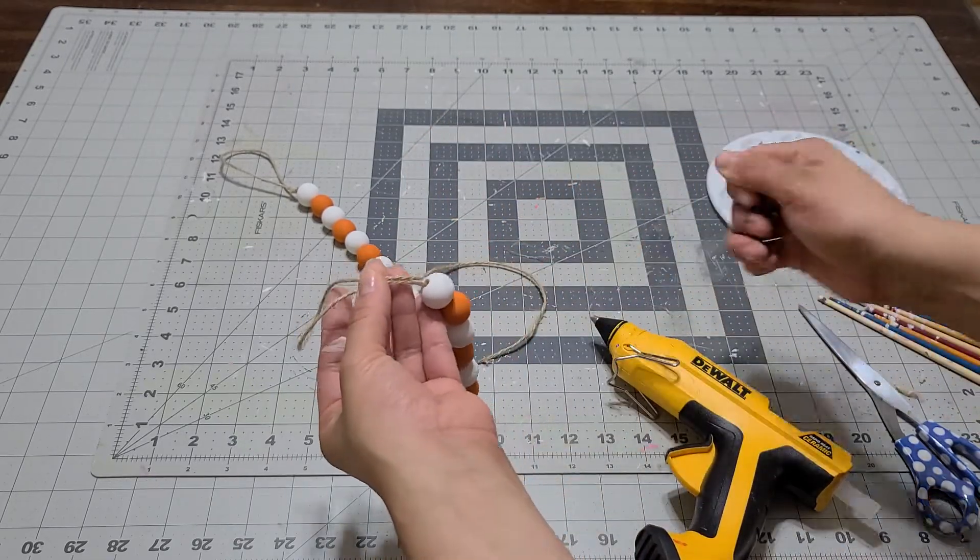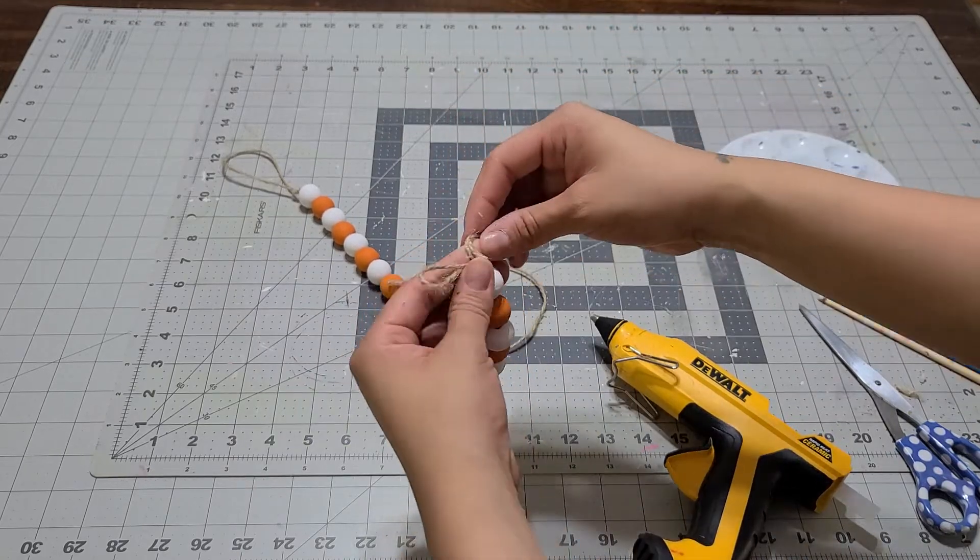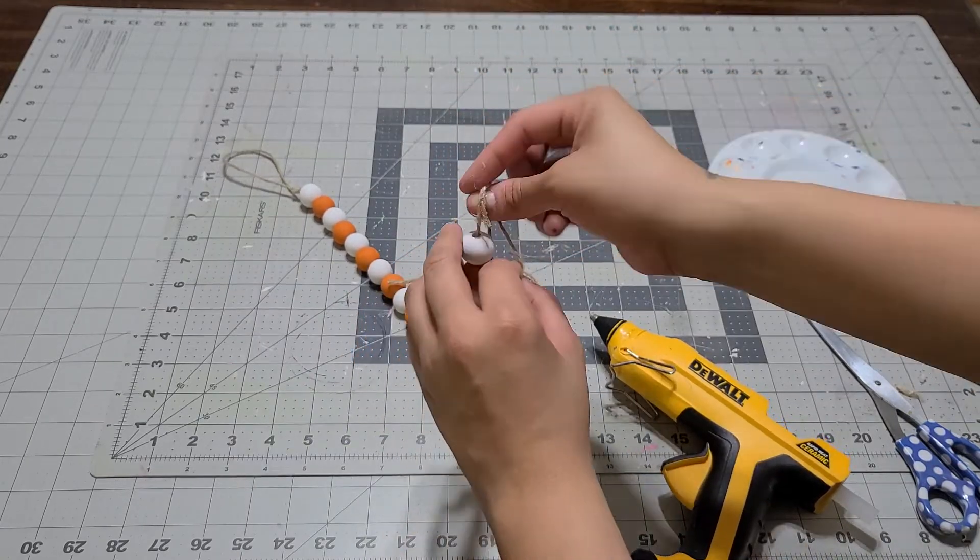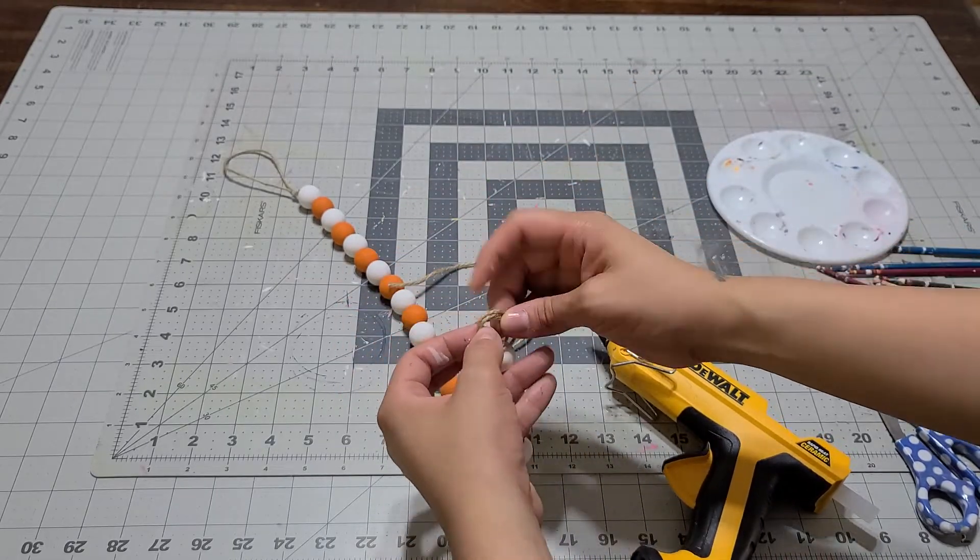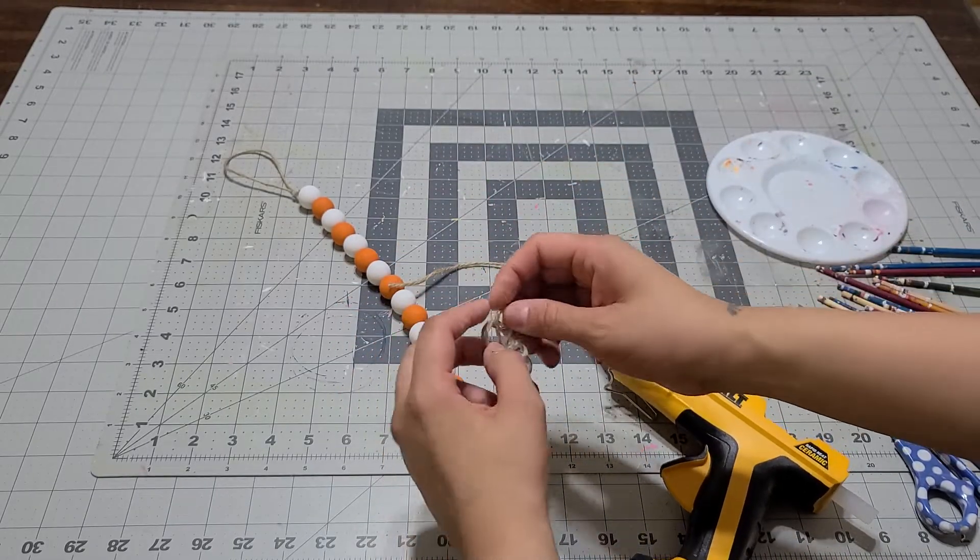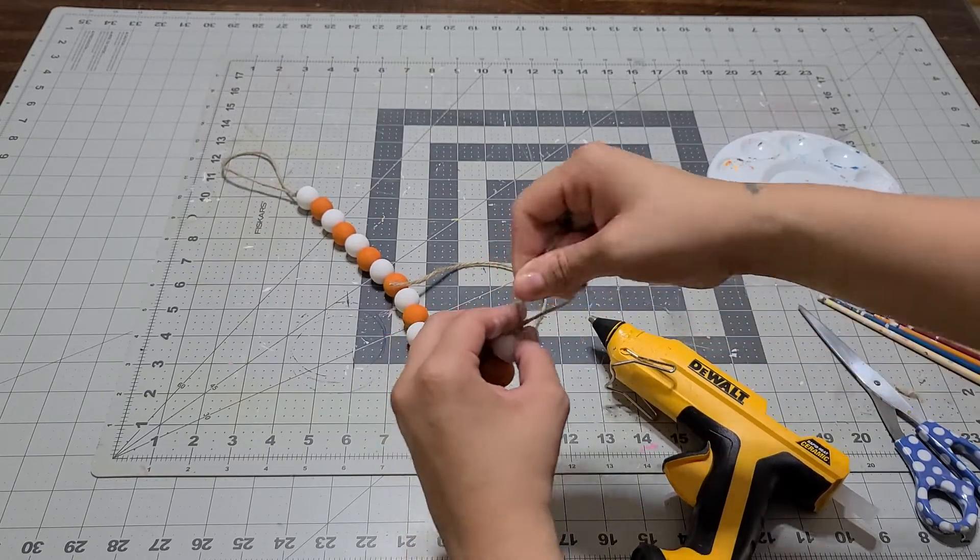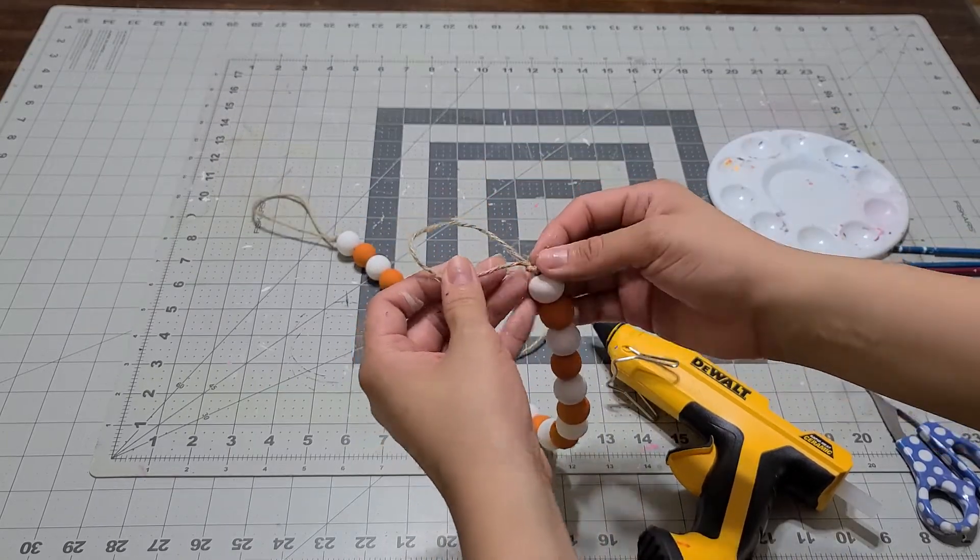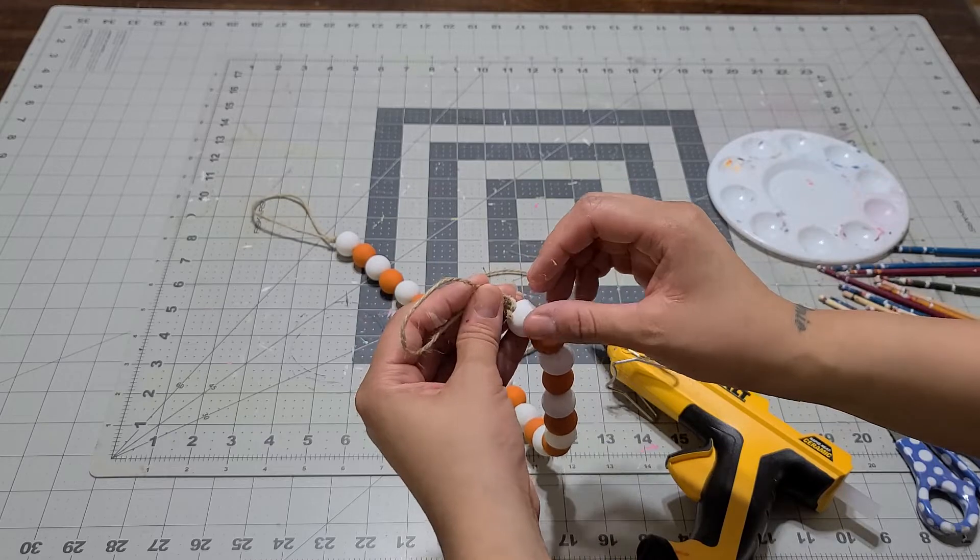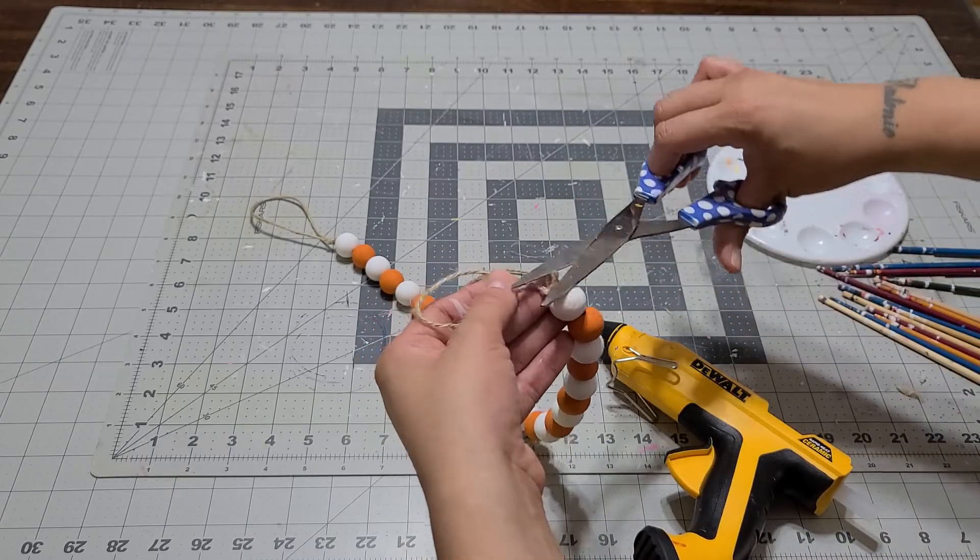Once you've got it, make a knot. Why the knot? I don't want anything moving—I don't want anything out of place. If anything stands out like this, you can glue it down or cut it off. Since we already have the knot, it won't go anywhere.